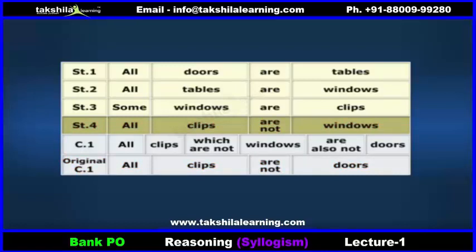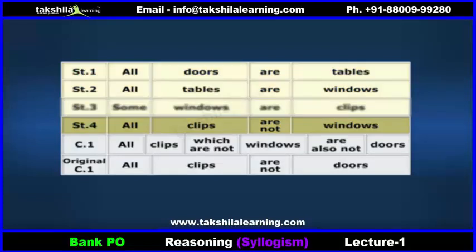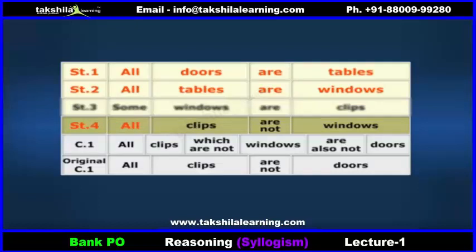Now I understood, let me solve it quickly. I'll consider statements 1, 2, and 4, as the route is formed here. Statement 1: all doors are tables. Statement 2: all tables are windows. Statement 4: all clips are not windows. And checking conclusion: all clips are not doors.